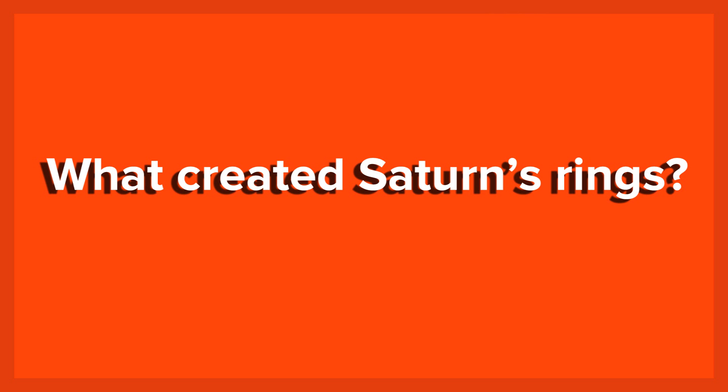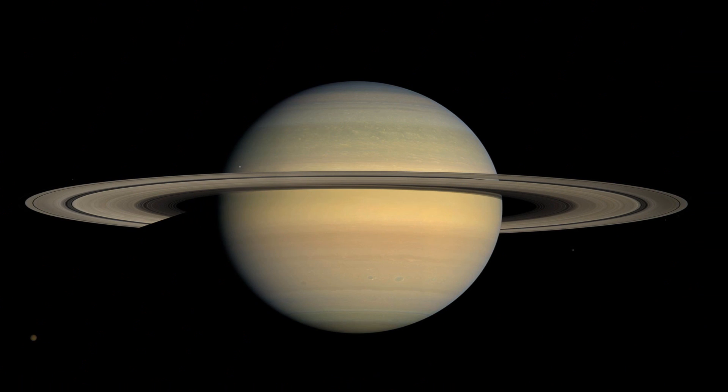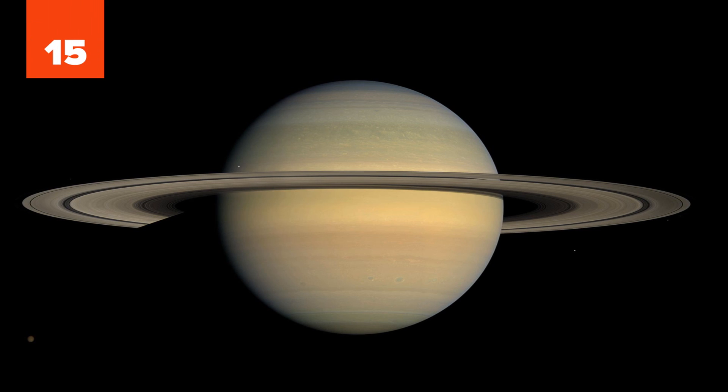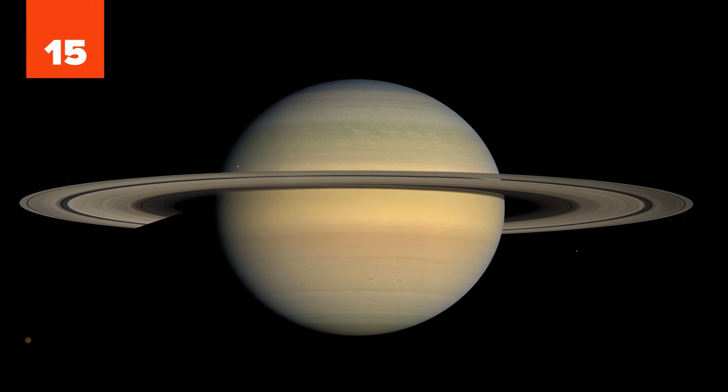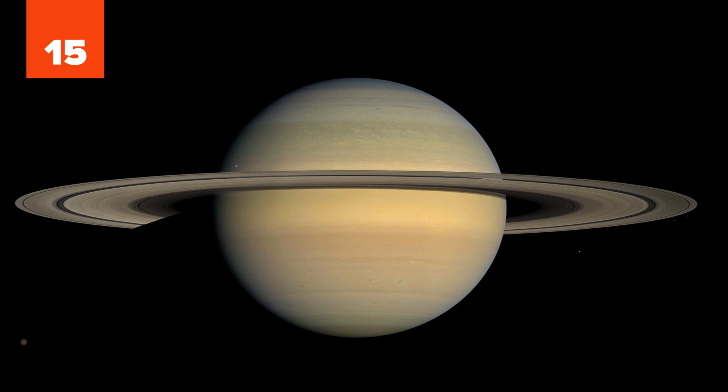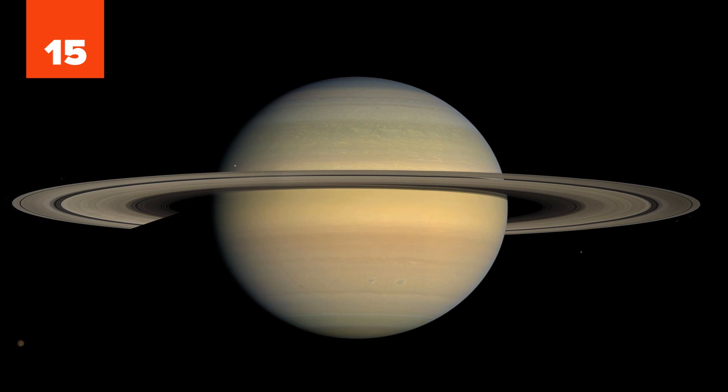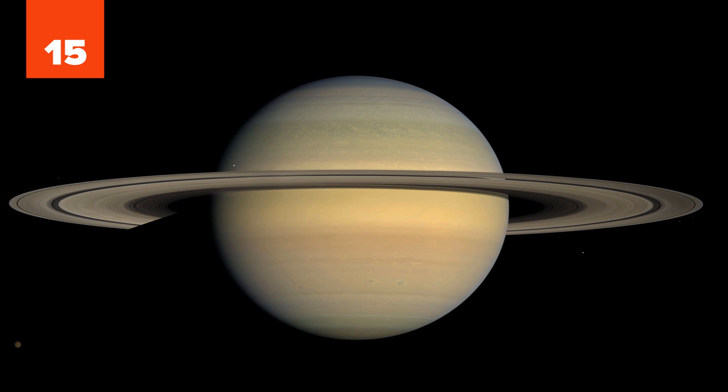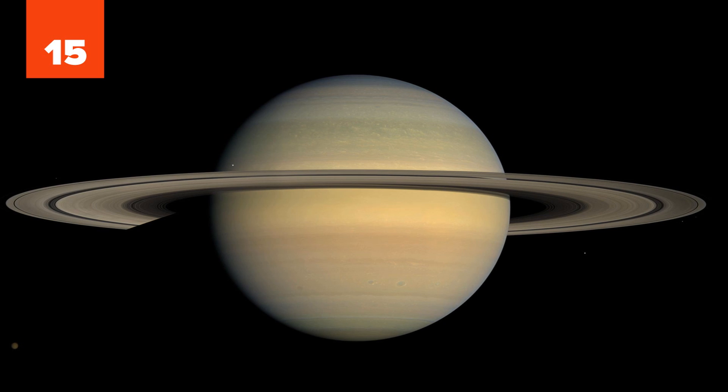Number 15: What Created Saturn's Rings? The most accepted theory at this time is that Saturn's rings probably formed when objects like comets, asteroids, or even moons broke up in orbit around the planet due to its strong gravity. The pieces of these objects kept colliding with each other and broke into even smaller pieces.